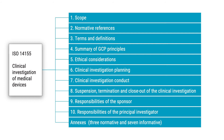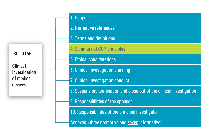The standard released in 2020 has 10 clauses and 10 annexes — 3 normative and 7 informative — and is almost twice as long as the previous version. It starts by providing an overview of terms and definitions; there are 55 of them, and it's very useful to use the correct widely accepted terms. What is new in the 2020 version is a summary of the GCP principles, which have been aligned with the ICH's GCP principles, presented in clause 4.